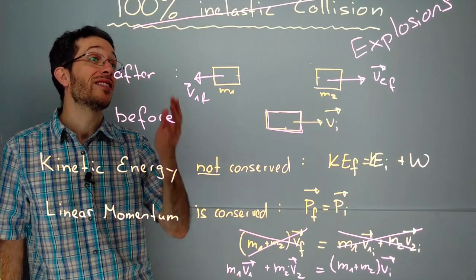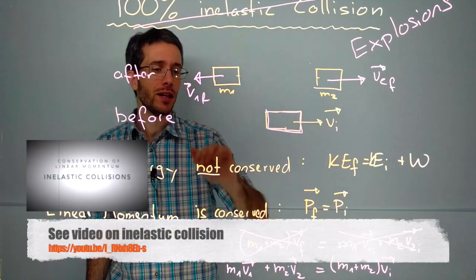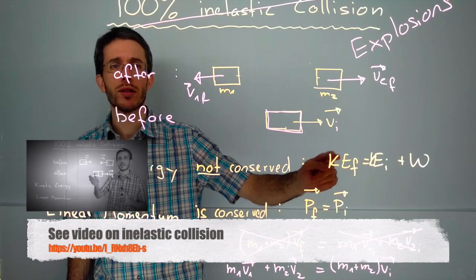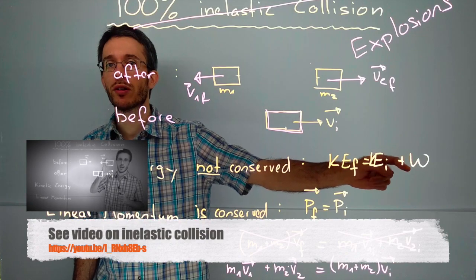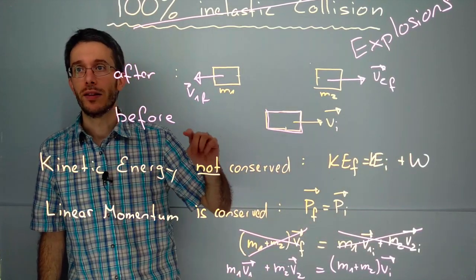Kinetic energy, as in an inelastic collision, is not conserved. In the inelastic collision, the energy went down, so your final energy was lower. Why? Because there was negative work done in order to deform the material during the collision.